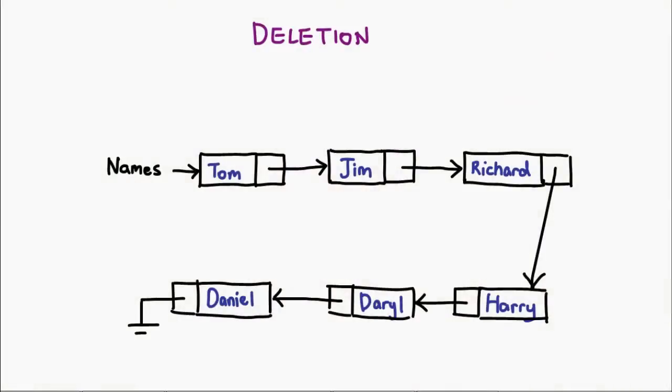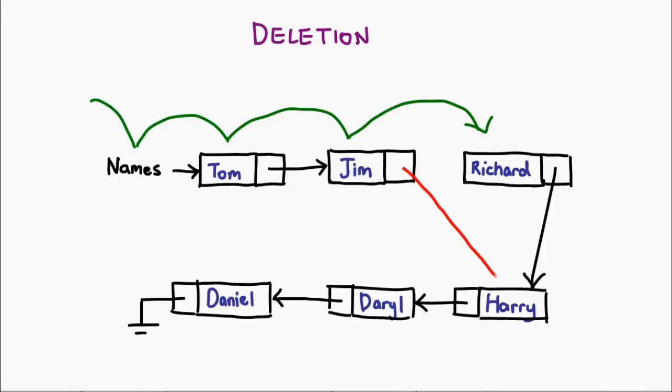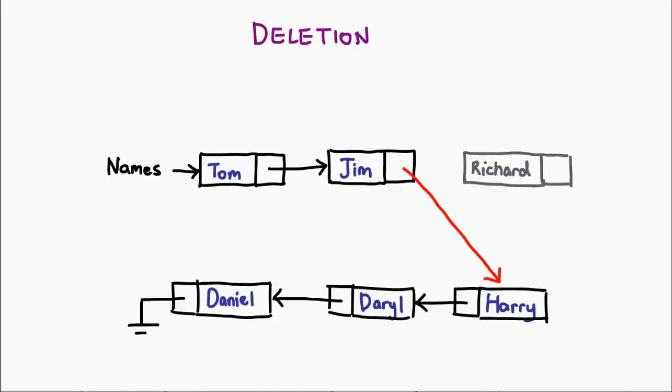Let's now talk about deletion, which really is the same thought process just in reverse. Let's say I've traversed my linked list and I want to delete this item. That's not hard because I just need to find out what this item is pointing to, and take the node before it and point it to that item. That then breaks this item out of the linked list, allowing us to delete it using whatever method our programming language offers. So there you go — that's access, insertion, and deletion along a linked list. Not too difficult, but it just requires a little bit of thought.